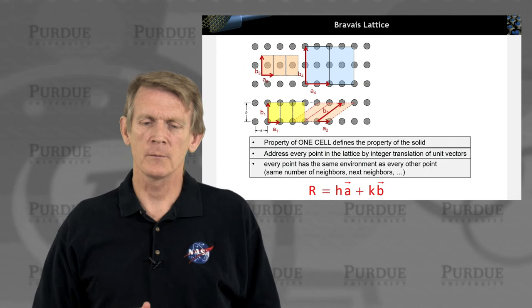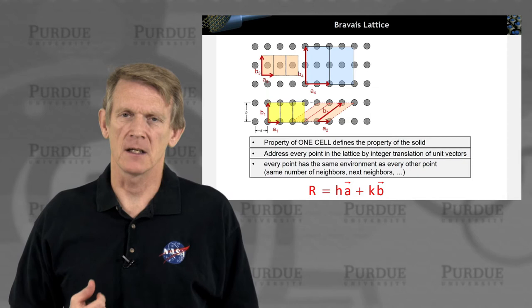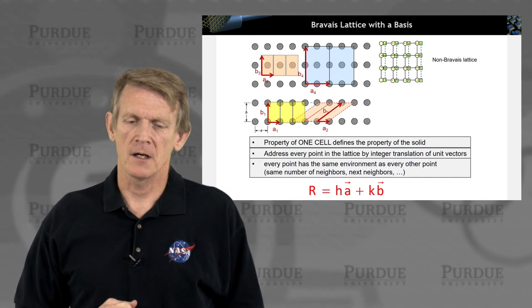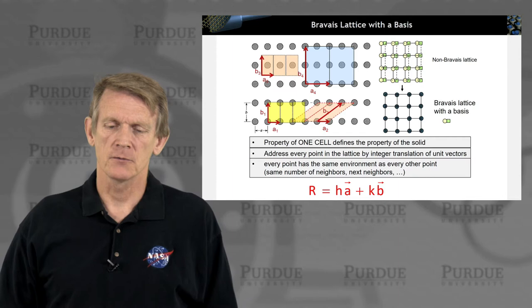And we'll go one more further, that in a Bravais lattice, what we want to achieve is that every point has the same environment as every other point. So if you consider, for example, a structure like this, it looks very regular on the top right, where you have these yellow and green atoms. It's a very regular structure, but this is not a Bravais lattice.